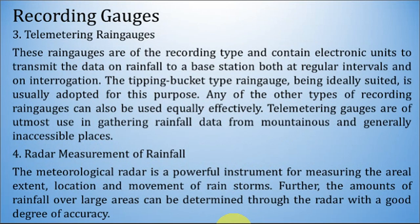The third type is the telemetering rain gauge. These are recording type gauges containing electronic units to transmit rainfall data to a base station at regular intervals and on interrogation. The tipping bucket type is usually adopted for this purpose, though other recording types can also be used effectively. Telemetering gauges are of utmost use in gathering rainfall data from mountains and generally inaccessible places. Meteorological radar is also a powerful instrument for measuring the aerial extent, location, and movement of rainstorms, and can determine rainfall amounts over large areas with good accuracy.